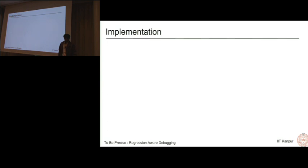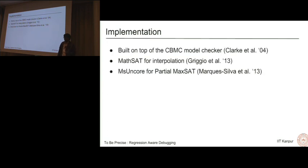A quick slide about the implementation. We build Tintin on top of the CBMC model checker by Clarke et al. CBMC acts as a front end. It can take a C program as input, converts it into a logical formula and our work steps in. We use MathSAT for interpolation and we use MSUNCORE for partial MaxSAT. This was also used by BugAssist in their evaluation.